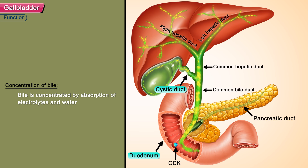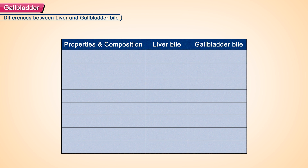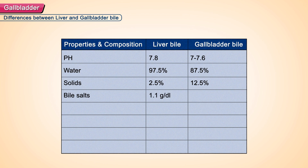Concentration of bile: Bile is concentrated by absorption of electrolytes and water. The differences between liver bile and gallbladder bile are as follows. The pH of liver bile is 7.8, whereas it is 7 to 7.6 for gallbladder bile. Water is 97.5% for liver bile and 87.5% for gallbladder bile. Solids are 2.5% for liver bile and 12.5% for gallbladder bile. Bile salts are 1.1 gram per deciliter in liver bile and 6 grams per deciliter in gallbladder bile.